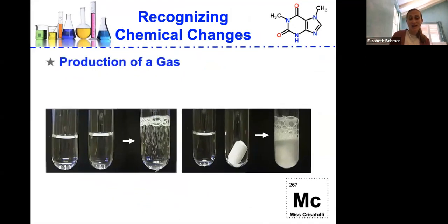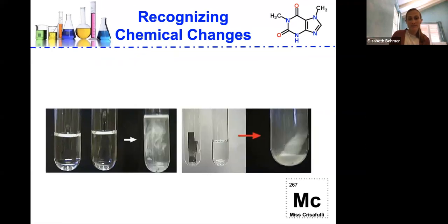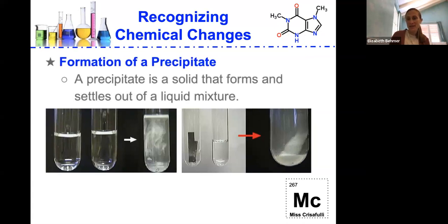The production of a gas. So let's say you mix two substances together and bubbles form. Those bubbles are the production of a gas that's being formed. Or the formation of a precipitate. Let's say we're mixing two substances together and at the end, the precipitate will be a solid that's forming and settles out of the mixture. And a precipitate has formed here. Once we mixed these two solutions, that formation of a precipitate shows us that there was a chemical change happening.